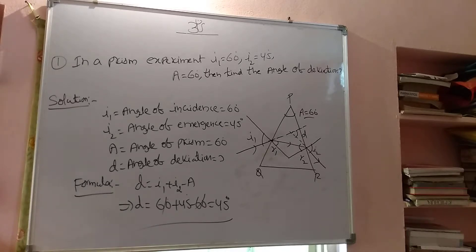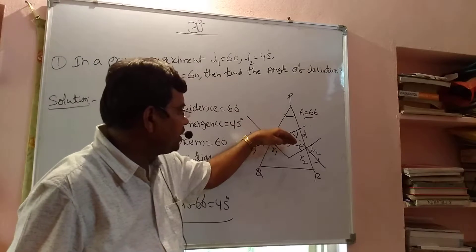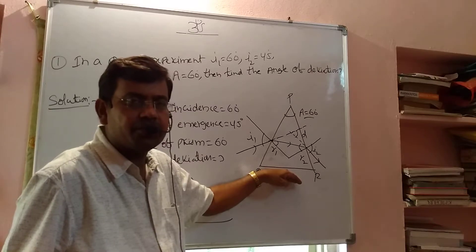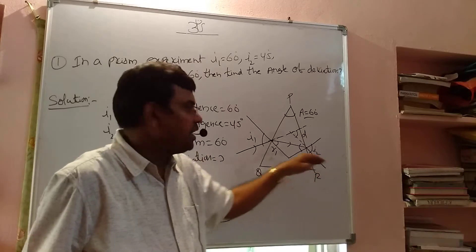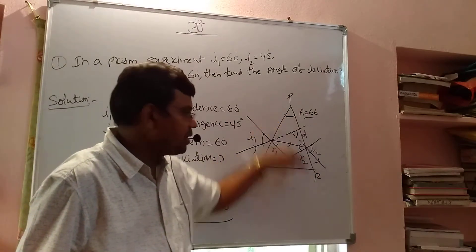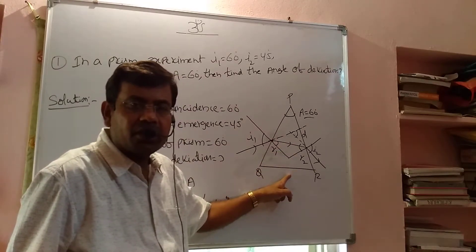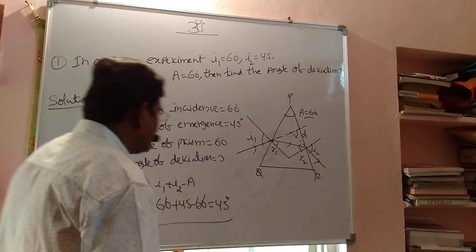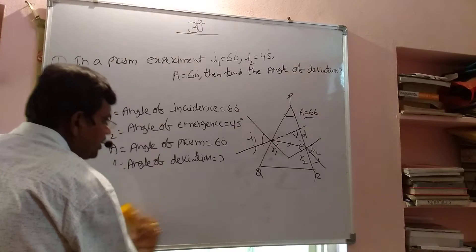Similarly, we do another problem related to the angle of minimum deviation. At a general angle of deviation, the refracted ray is not parallel to the base. But at the angle of minimum deviation position, the angle of incidence and angle of emergence become equal, and the refracted ray is parallel to the base.